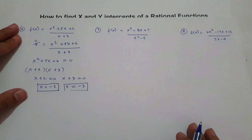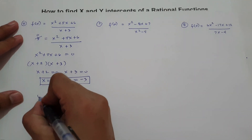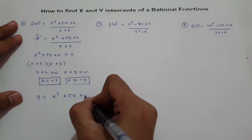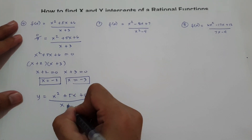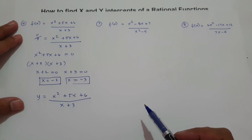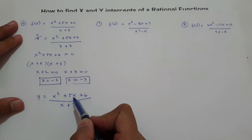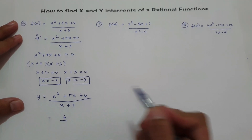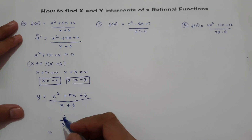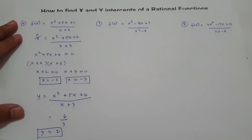For y intercept, substitute x = 0 into y = (x² + 5x + 6) / (x + 3). When x = 0, the numerator becomes 0 + 0 + 6 = 6, and the denominator becomes 0 + 3 = 3. Then 6 divided by 3 is 2. So the y intercept is 2.